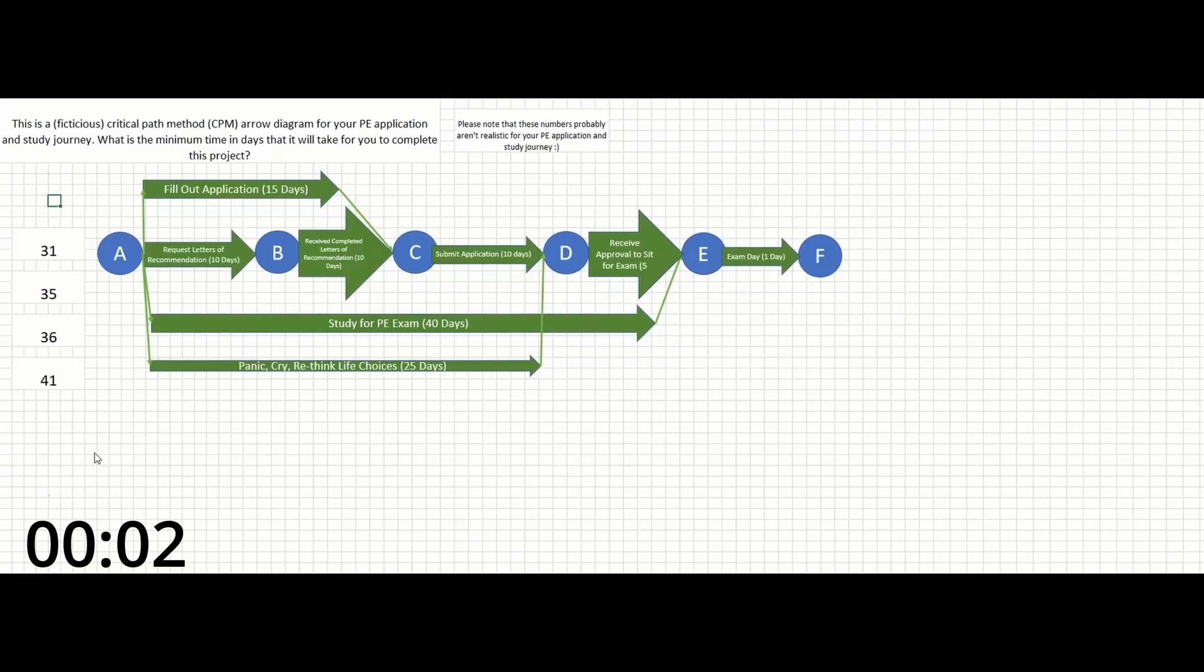Okay guys, this is a fictitious critical path method arrow diagram for your PE application and study journey. We are being asked to find the minimum time in days that it will take to complete the project, aka find the critical path.